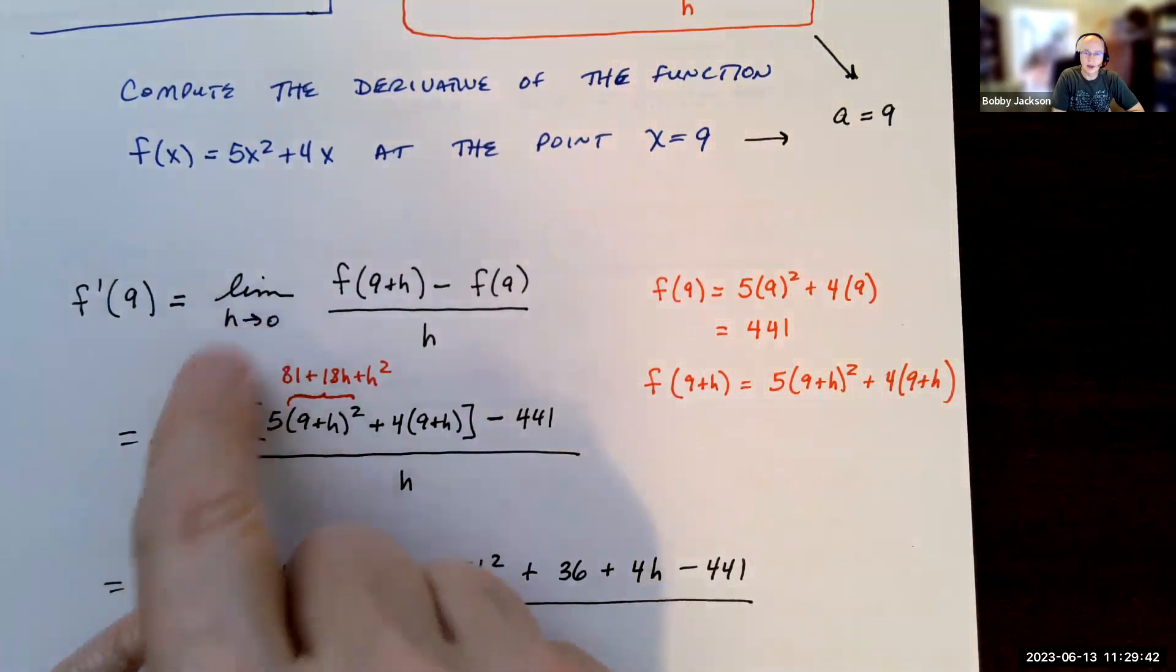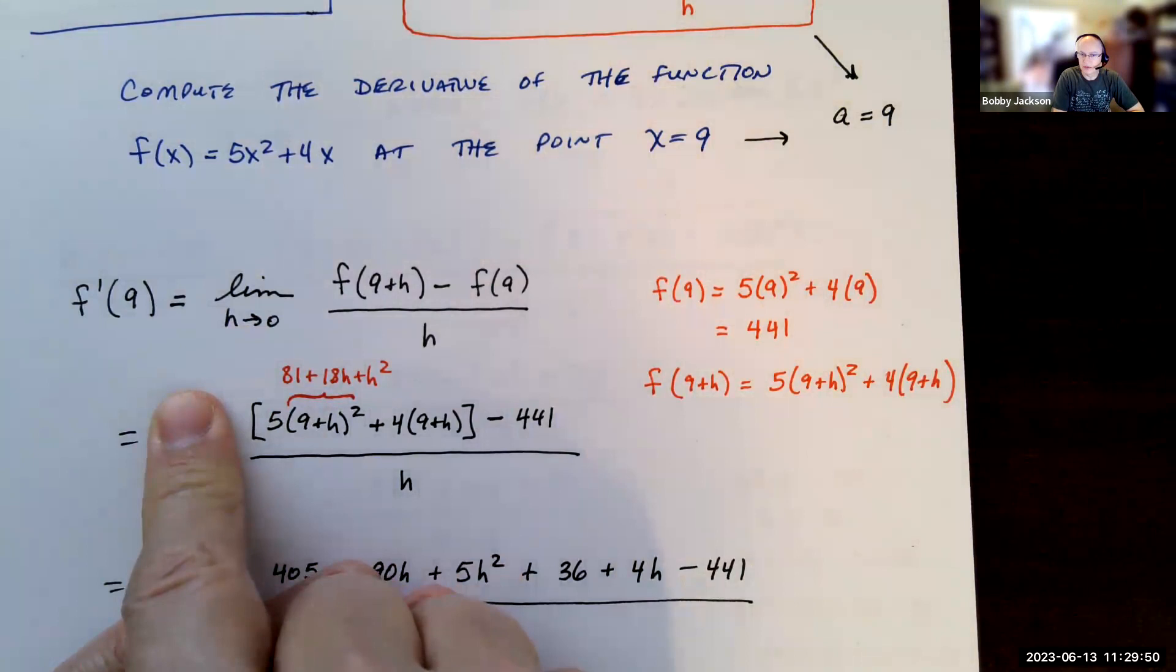Notice the limit has to continue - the limit has to be here. We can't lose the limit. It's incorrect to say that this limit is equal to this stuff without the limit. That would be incorrect.